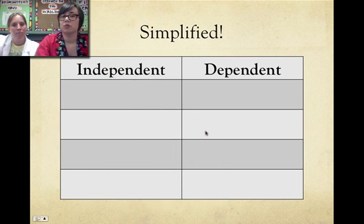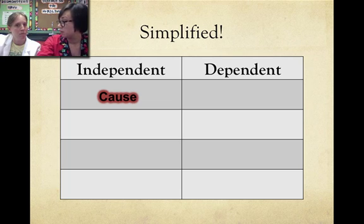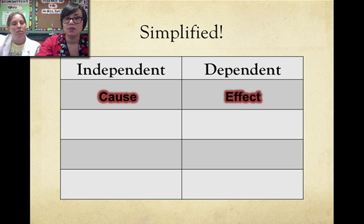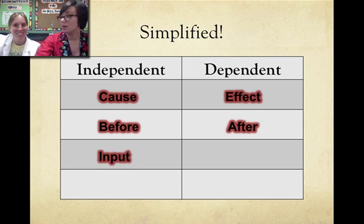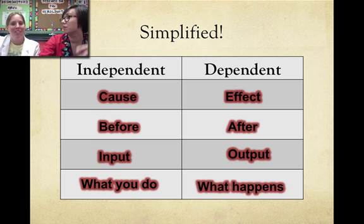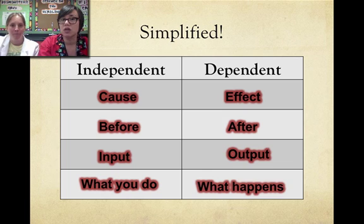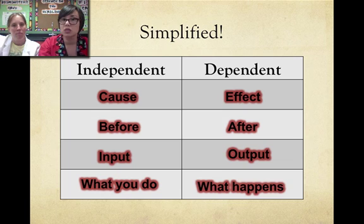Let's use different terms to make IV and DV easier to understand. If the independent variable is the cause, the dependent variable is the effect. If the IV is the 'before,' the DV is the 'after.' If the IV is the input, the DV is the output. And if the IV is 'what you do,' the DV is 'what happened.' Keep this chart in mind when looking at word problems — independent variable: cause, what I change; dependent variable: effect, what we are measuring.